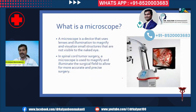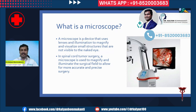This is a surgical microscope. A microscope is a device that uses lenses and illumination to magnify and visualize small structures that are not visible to the naked eye. In spinal cord tumor surgery, a microscope is used to magnify and illuminate the surgical field to allow for more accurate and precise surgery.